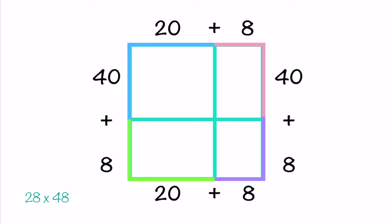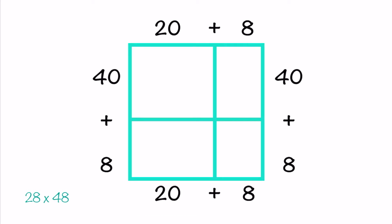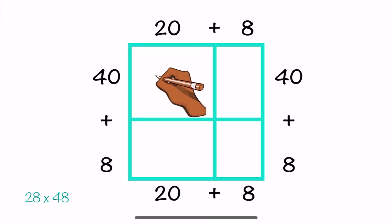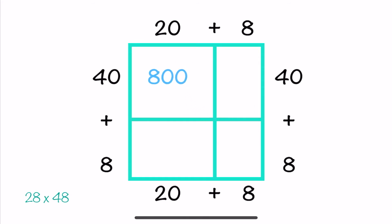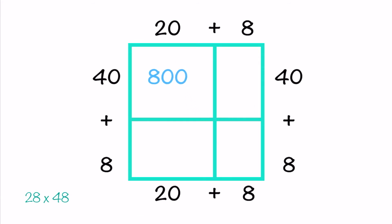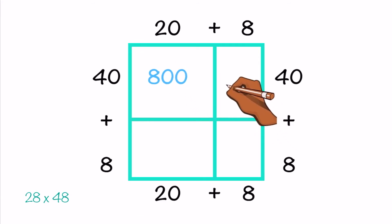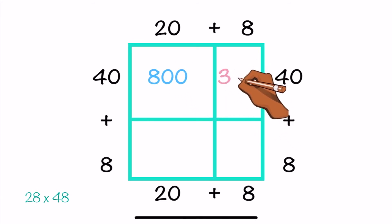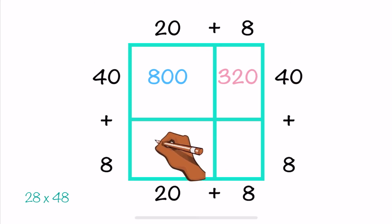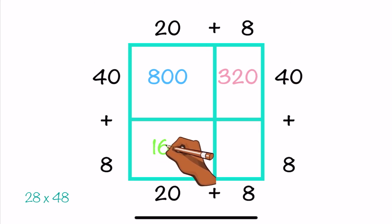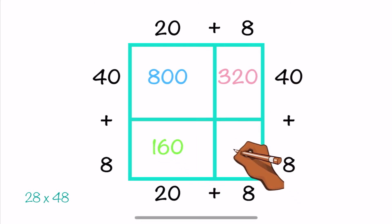Now we're ready to multiply. Starting with 40 times 20 — that's 800. Then 40 times 8 is 320. 8 times 20 is 160. And 8 times 8 is 64.